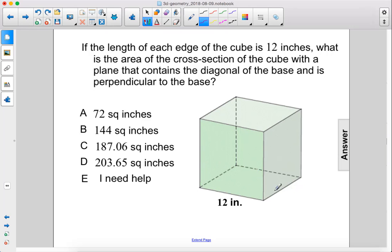If the length of each edge of the cube is 12 inches, what is the area of the cross section of the cube with a plane that contains the diagonal of the base, here, and is perpendicular to the base?